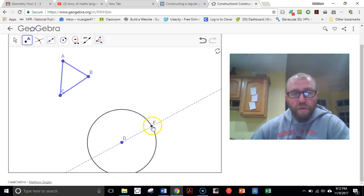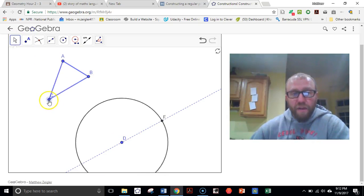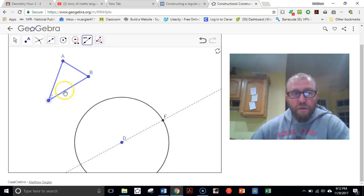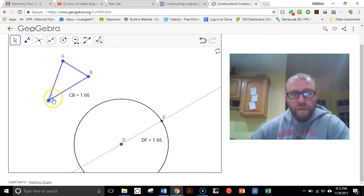And now over here I'll place a point at the place where the compass intersects the line. And I have a segment that is the same length as CB recreated down here. You see, I can grow it, make it bigger, make it smaller. In fact, we're just going to go ahead and use our distance tool to mark that CB is 1.65. And DF is also 1.65. And they're going to stay that way.